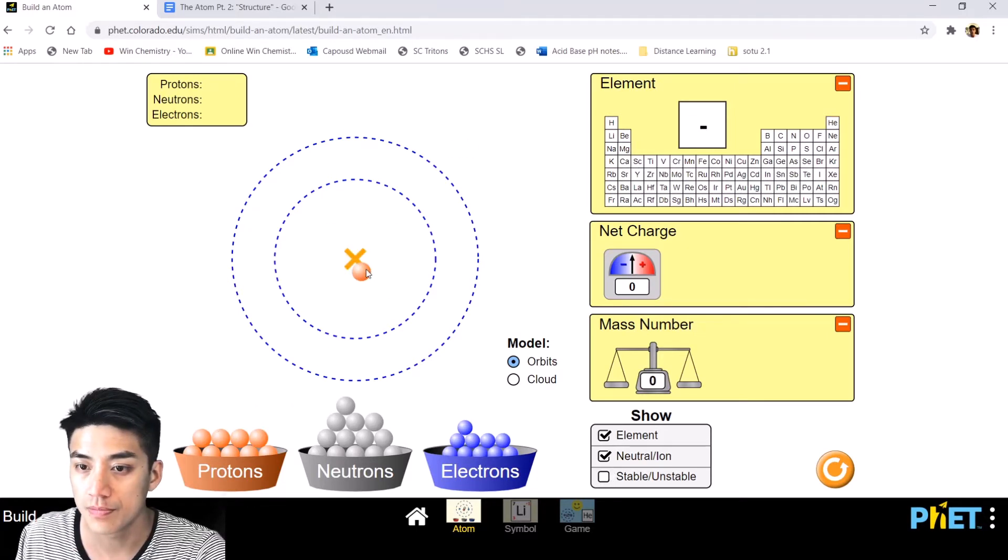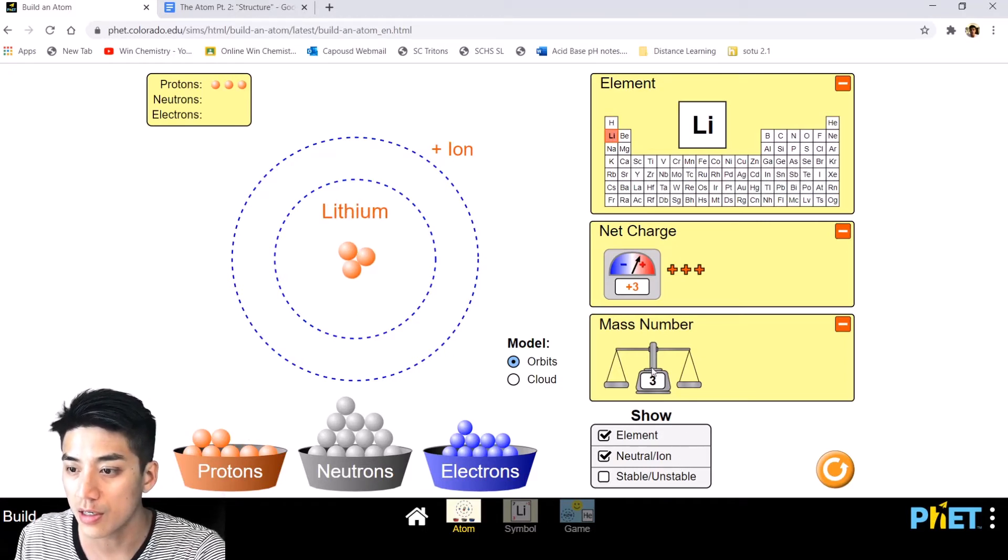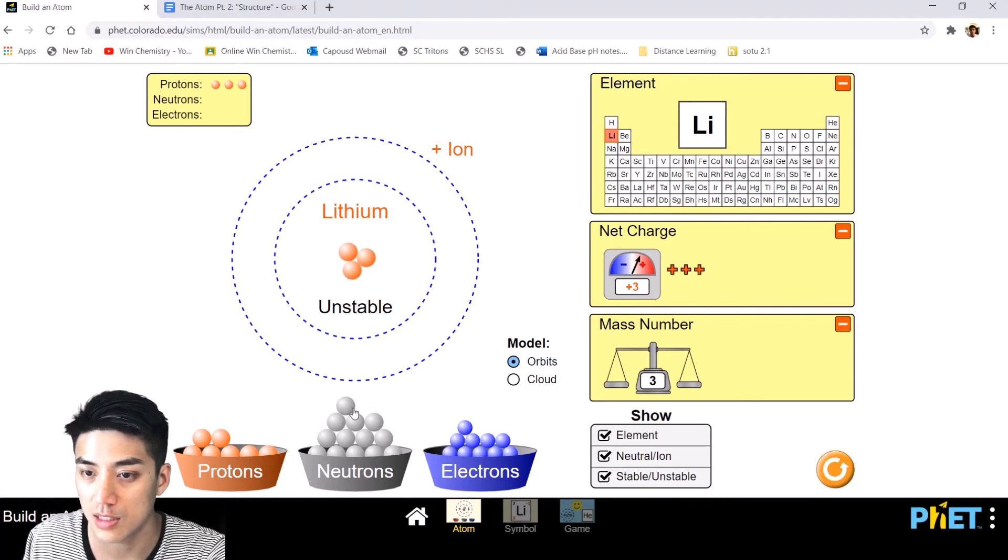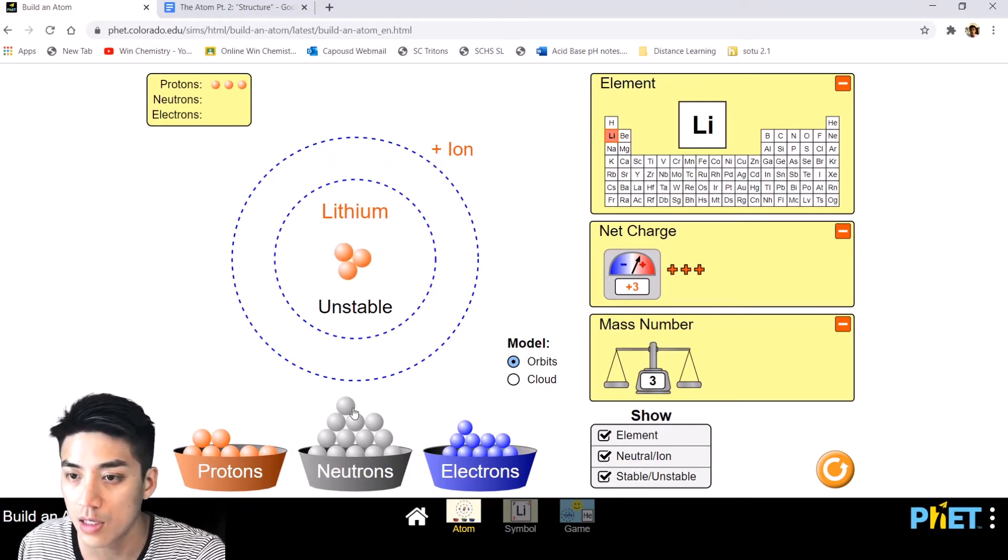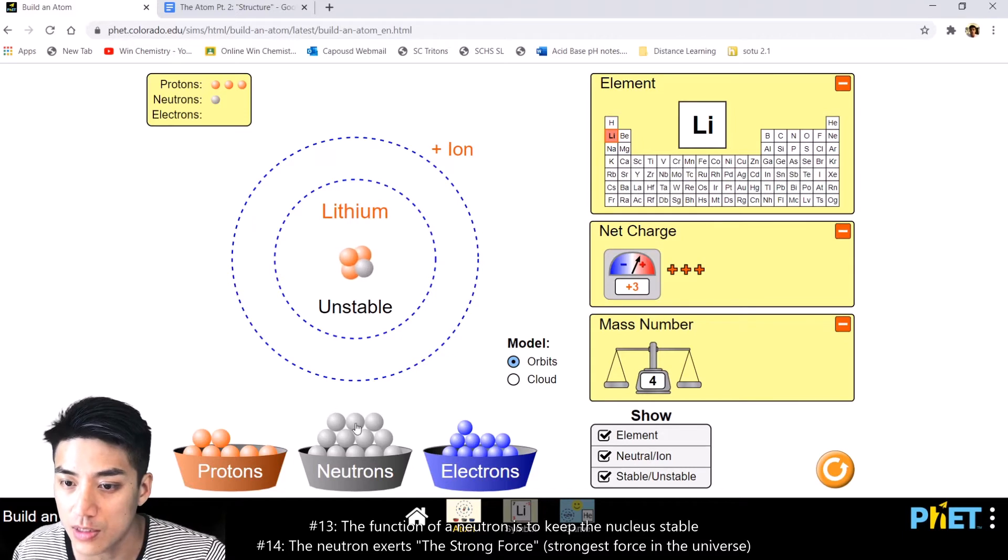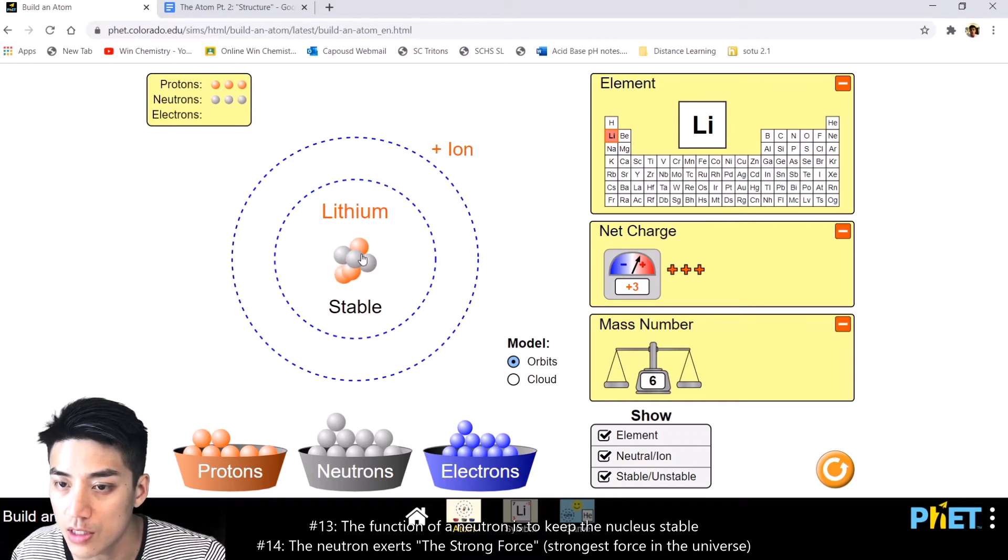Let's build a different atom. I'm going to quickly throw in three protons. So this is a lithium ion. And now we're going to check this box where it says stable and unstable. You can see how it's jiggling, and when it's jiggling, this indicates that this ion is unstable. The reason why it's unstable is because it's naked and has no neutrons. So one of your problems in the homework will ask: what's the function of neutrons in the nucleus? Why do you need neutrons? Neutrons provide a stabilizing force. They exert something called the strong force.